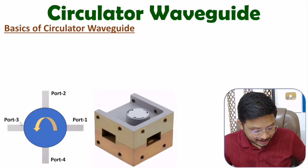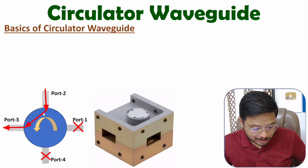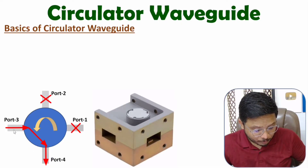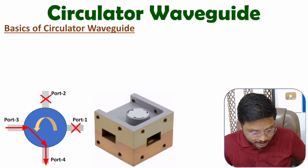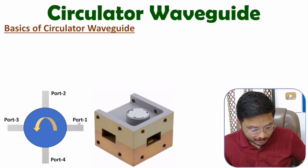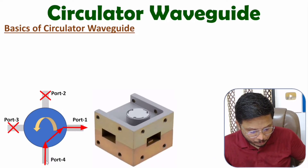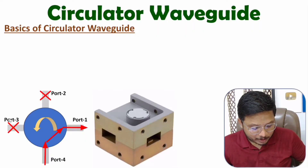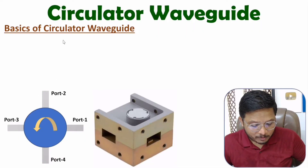If you give input at port one, the signal goes to port two and remaining ports are isolated. If you give input at port two, output appears at port three and remaining ports are isolated. If you give input at port three, it circulates towards port four and remaining ports are isolated. Similarly, if input is at port four, the signal circulates towards port one.